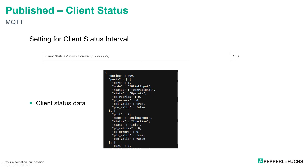For publishing client status, there is a setting for the client status interval. The limits for that status is 0 to 999,999. Below, you can see the client status data, which is an example, and it shows the different variables that will be produced for each port.